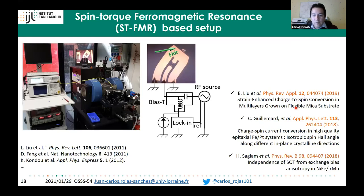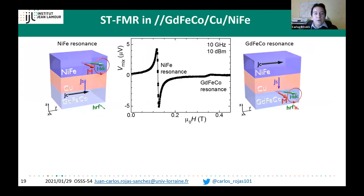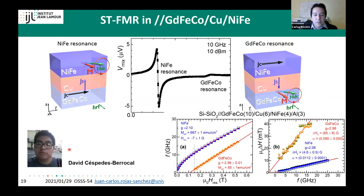Our main system is the three-layer gadolinium-iron-cobalt/copper/permalloy stack. The 6 nm copper layer reduces magnetic coupling between permalloy and GdFeCo. We can observe both resonant lines: one corresponding to permalloy magnetization precession, and one corresponding to GdFeCo magnetization precession. The frequency dependence of linewidth for GdFeCo (orange and green) and permalloy (blue) allows us to extract the magnetic damping, which we will focus on modulating.